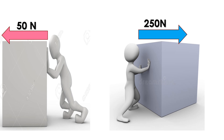Inertia completely depends on mass, and mass is directly proportional to inertia. For example, there are two cases: the left box is the lighter one and the right box is the heavier one. To move the left box I may have to apply 50 newtons, but for the right box I may have to apply 250 newtons, because the left box has less mass, so less inertia, and the right box has more mass, so more inertia. That's all about Newton's First Law.